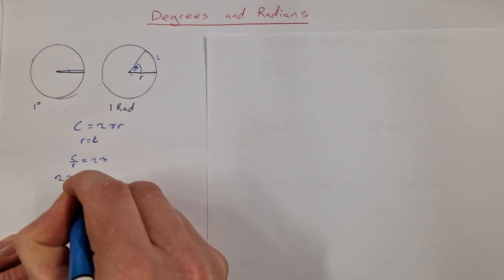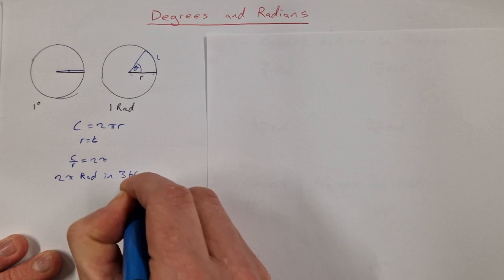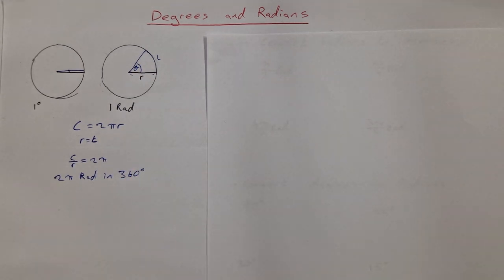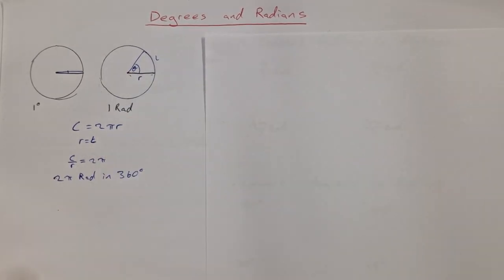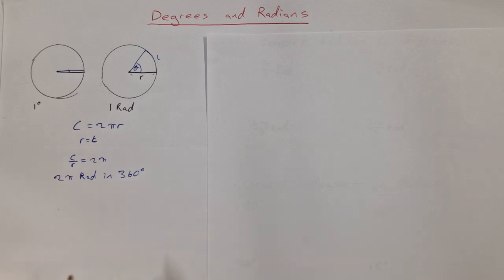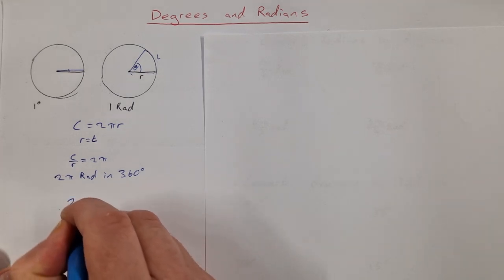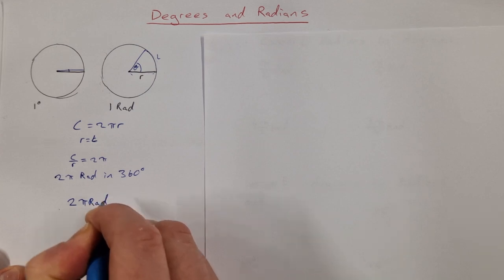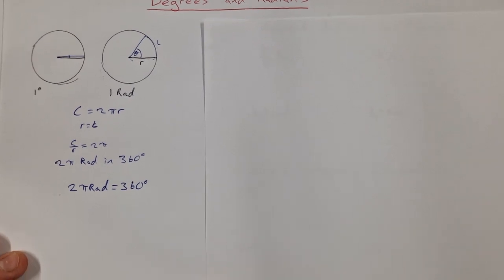2π radians in one circle is equal to 360 degrees. π is 3.14, so 2π is about 6.28, meaning there are just over six of these radians in one circle. When talking about radians we always deal in terms of π because it's much easier for calculations. So our base formula is: 2π radians equals 360 degrees.